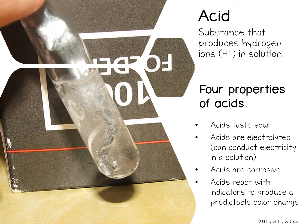You can test for the presence of acids by using an indicator. An indicator is a compound that changes color in the presence of an acid or base. So when used on an acid, the indicator will produce predictable color changes. An example would be an indicator called litmus paper — when placed in acid, the litmus paper will turn red.